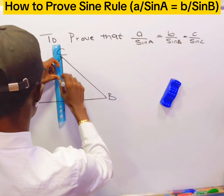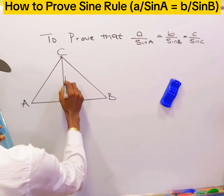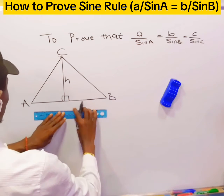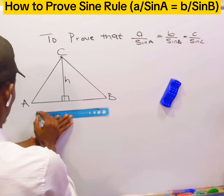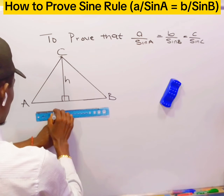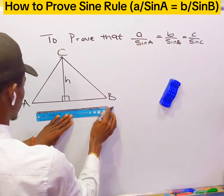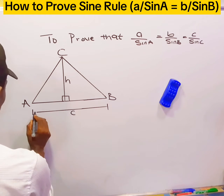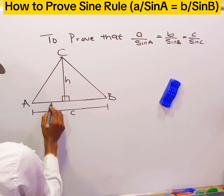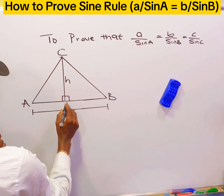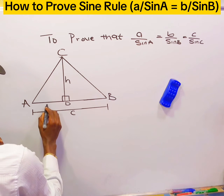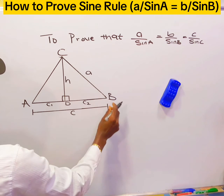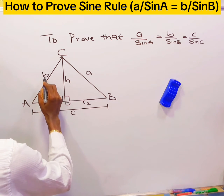We draw an altitude H from the triangle. Let's call the midpoint from A to B as D, and label the two sub-angles at D as C1 and C2. The side opposite angle A, let's call it small a, and the side opposite angle B, let's call it small b.